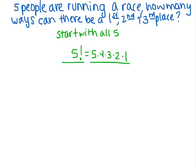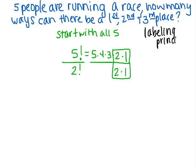If I only care about the first three people that cross the finish line, then this two times one is something that I don't care about. So I need to cancel that out — I'm going to divide by it. Looking at factorials, that means I'm dividing by two factorial. This is called the labeling principle. What it does is give us groups — we're grouping the total number of things. The groups I have are first place, one person; second place, one person; and third place, one person. And then everyone else.